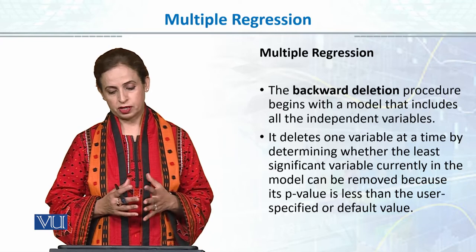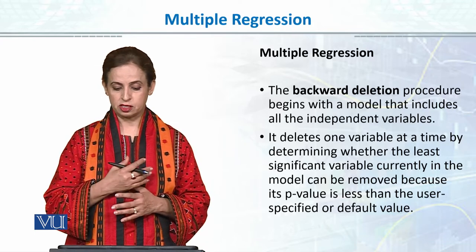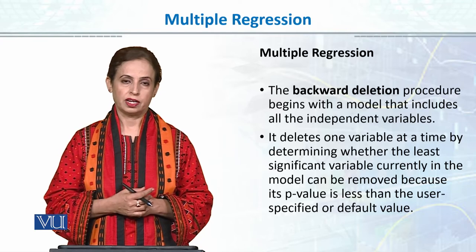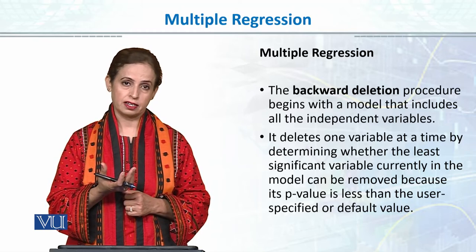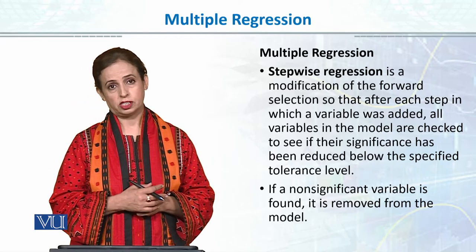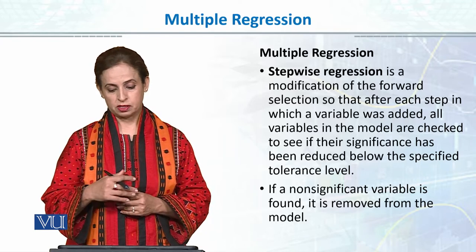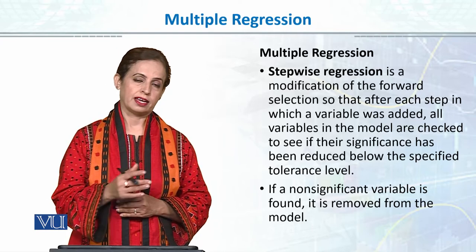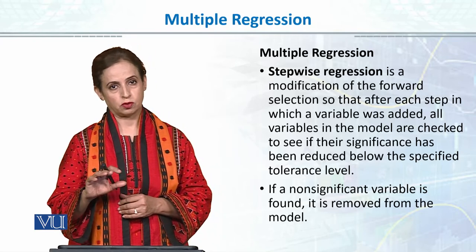Backward deletion works in the opposite direction — it starts with all variables in the model and deletes one variable at a time by determining whether the least significant variable currently in the model can be removed, based on whether its p-value is less than a user-specified criteria. Stepwise regression is a modification of forward selection, where after each step of adding a variable, all variables already in the model are checked to see if their significance has been reduced below a specified tolerance level.